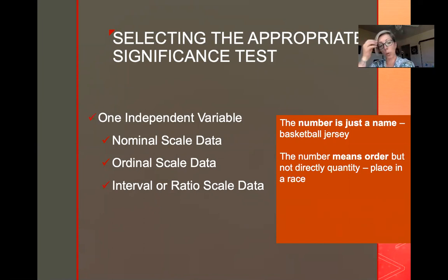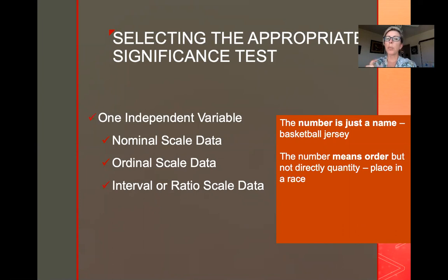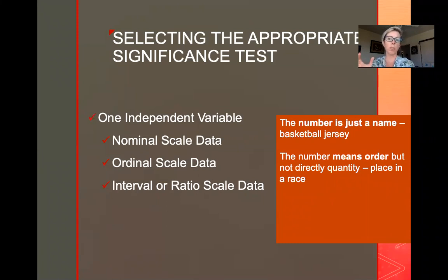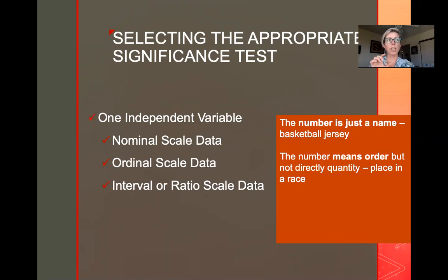The next type is ordinal data. Ordinal means that there is something about the order that matters, like first place or second place in a race. But just like in a race, there could be a different amount of time in between — there may be two seconds between first and second place in a swimming race, and then ten seconds between second and third place. So there's an order, but the distance between those two numbers is not fixed.